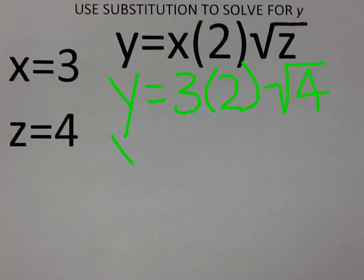So we can reduce 3 times 2, which we know is 6, multiplied by the square root of 4. Since we know the square root of 4 is 2, we can multiply 6 by 2.